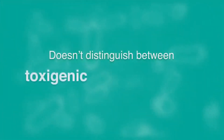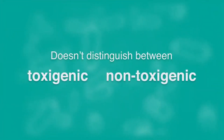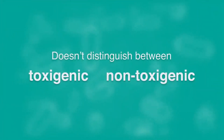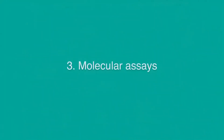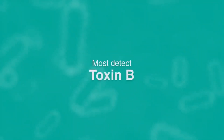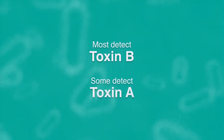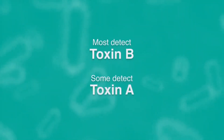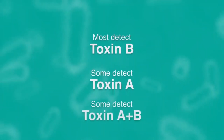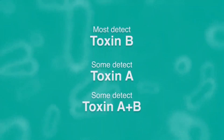The drawback is that GDH doesn't distinguish between toxigenic and non-toxigenic C. diff strains. Most of the molecular tests on the market detect a gene for toxin B. There are some that detect toxin A and some that detect both of the toxin genes.